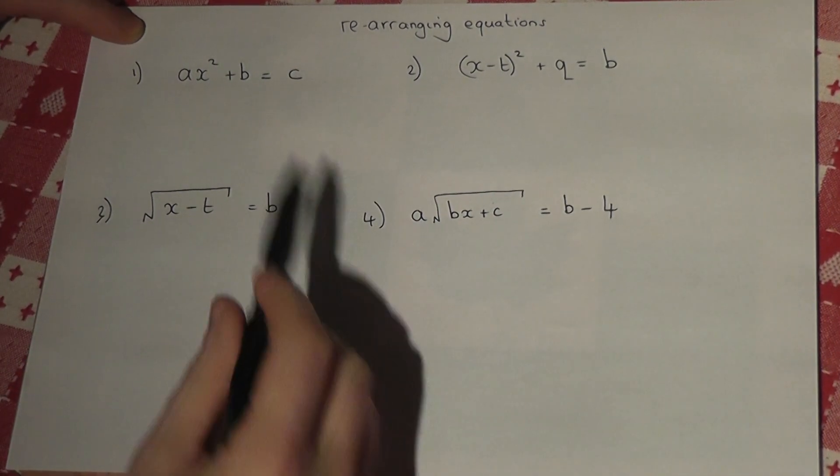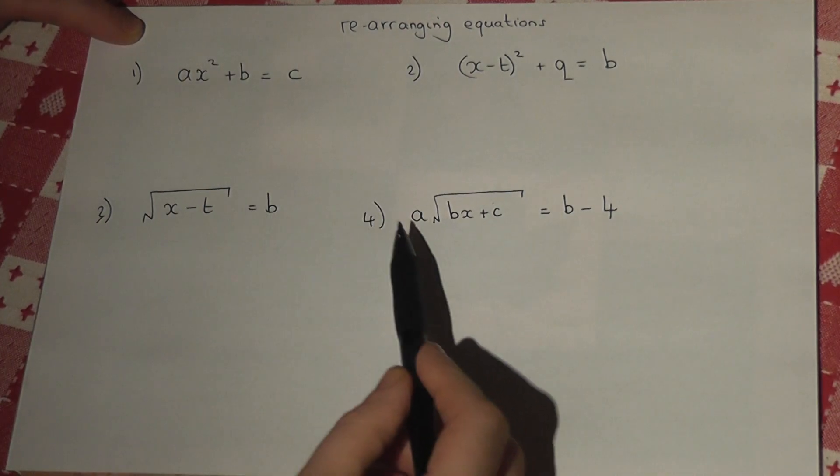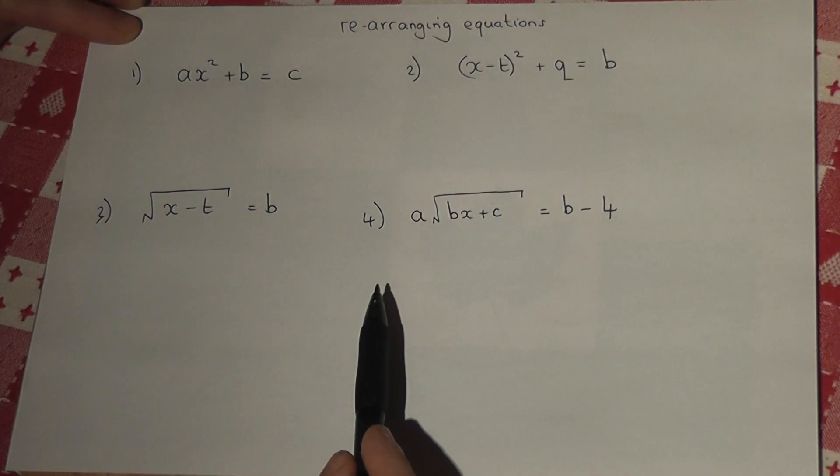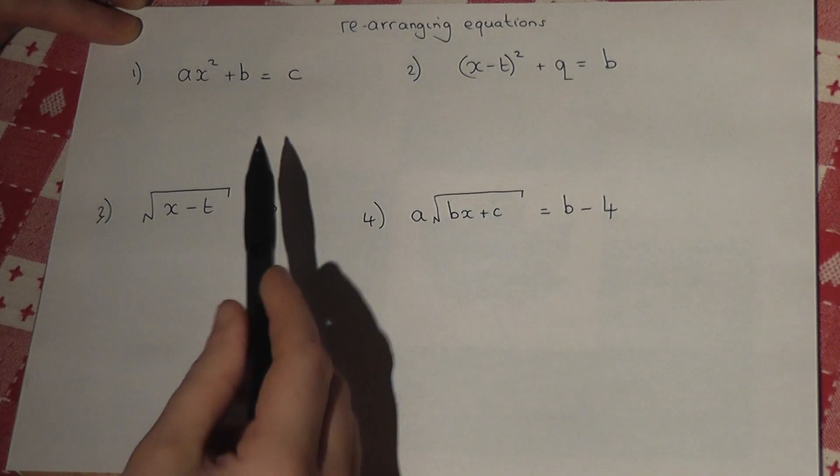Rearranging equations with squares or square roots can look more difficult, but actually, if we follow the steps through carefully, it's really quite easy. We follow the same general rules, which is to gradually make the equation simpler.